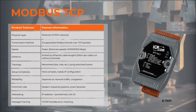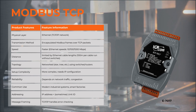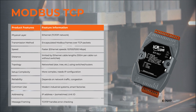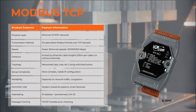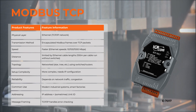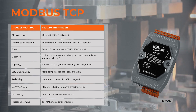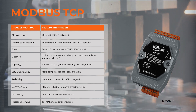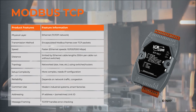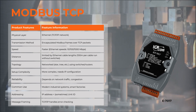Now let's discuss Modbus TCP. Its physical layer is Ethernet — a TCP/IP network. The transmission method is encapsulated Modbus frames over TCP packets. TCP speed is faster, running at Ethernet speeds of 10, 100, or 1,000 megabits per second.